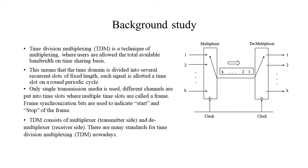TDM is a technique of multiplexing where users are allowed the total available bandwidth on a time-sharing basis. This means in the time domain, it's being divided into several irregular slots of fixed length, and each signal is allocated a time slot.